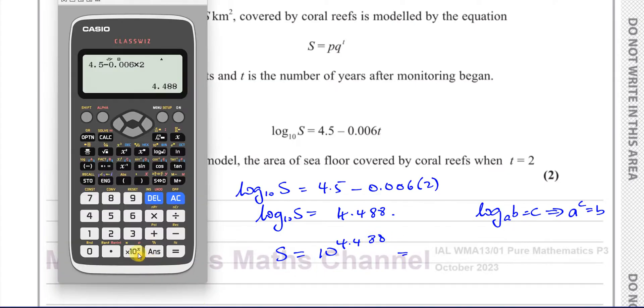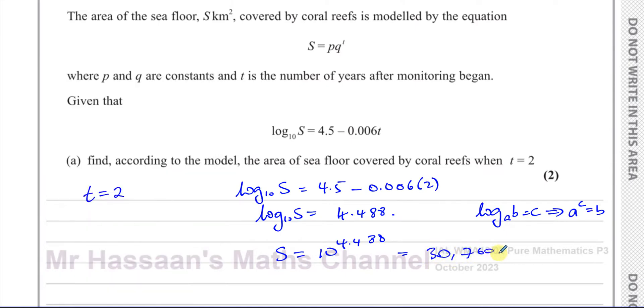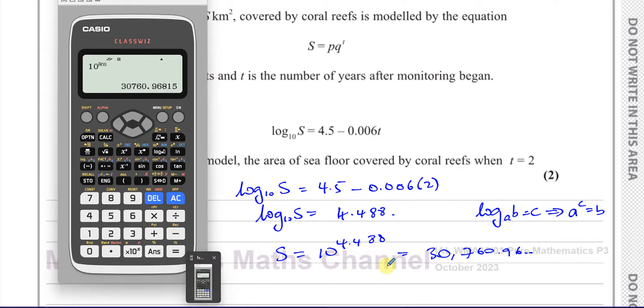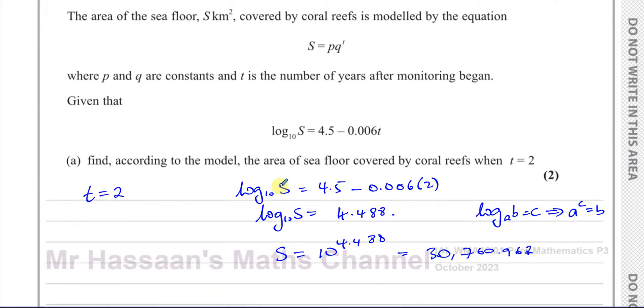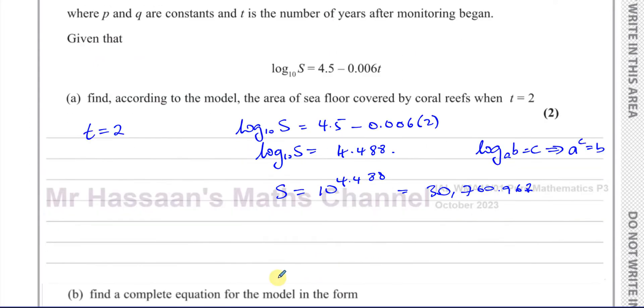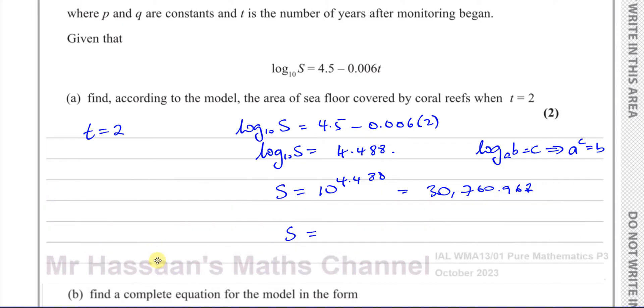So S equals 10 to the power of 4.488. We have 10 to the power of that last answer, which gives us 30,760.96. The answer doesn't tell us how to express it, so our final answer should always be to three significant figures unless otherwise stated. That is going to become 30,800.